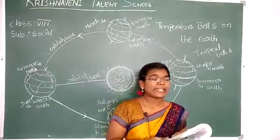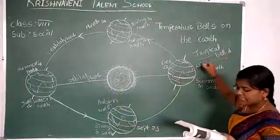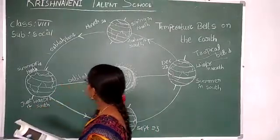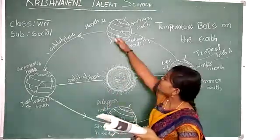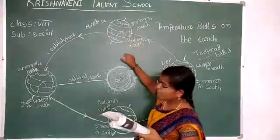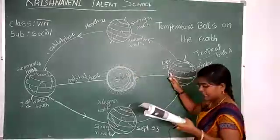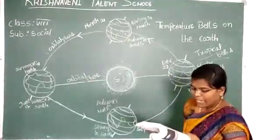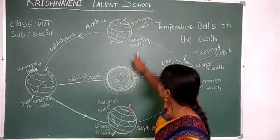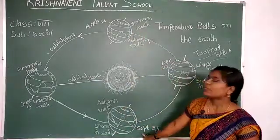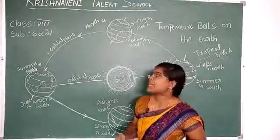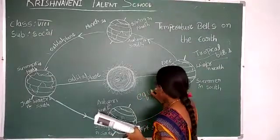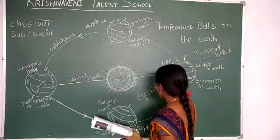This tropical belt gets maximum heat energy from the sun. On June 25th, the sun is at the Tropic of Cancer; on March 21st, the sun rays fall on the equator; on December 22nd, the sun is at the Tropic of Capricorn. On March 21st and September 23rd, day and night are equal in length, which is why we call these days the equinox.